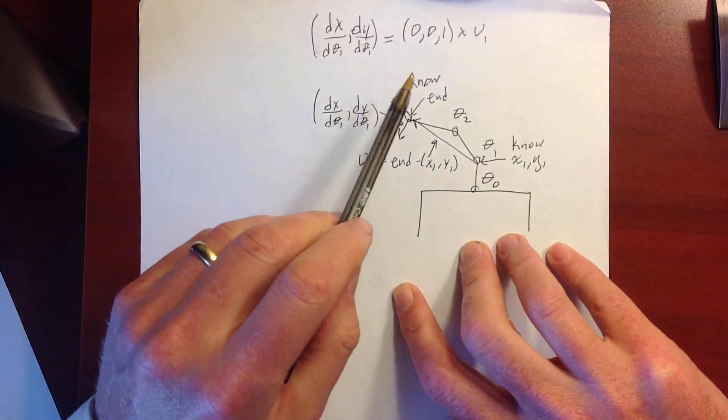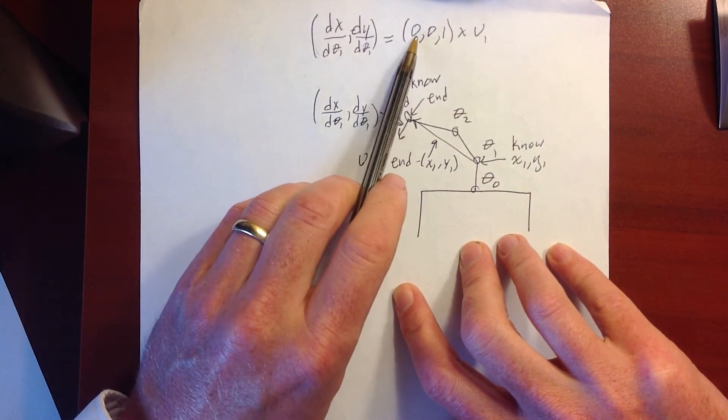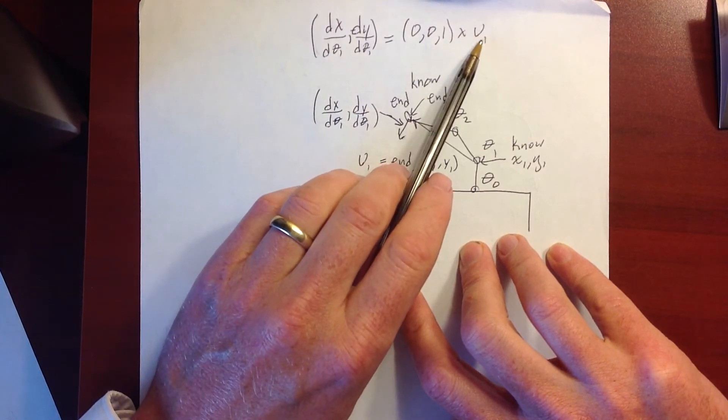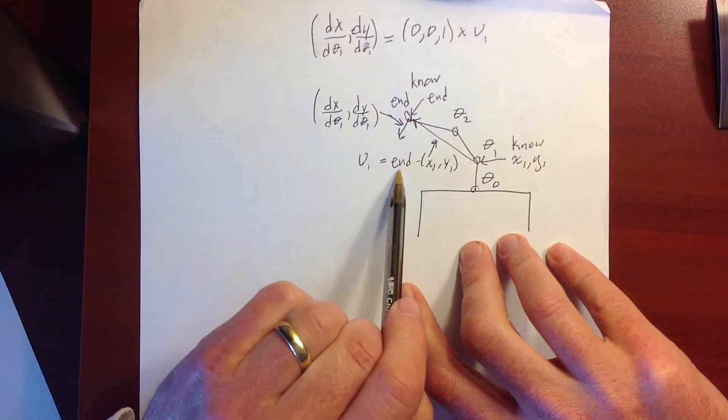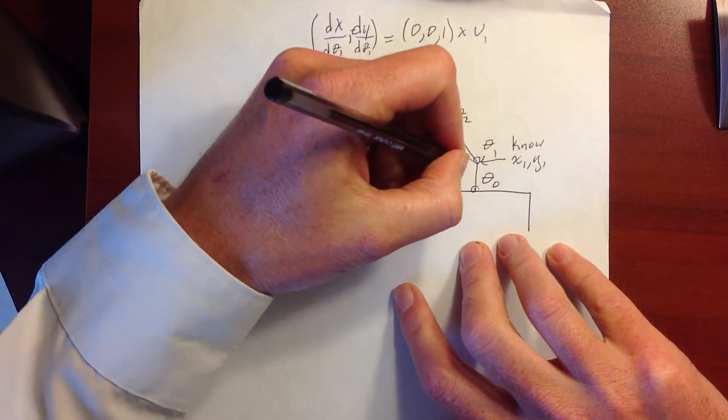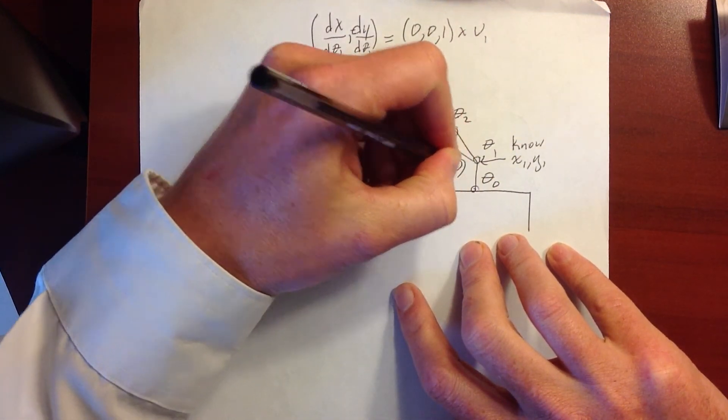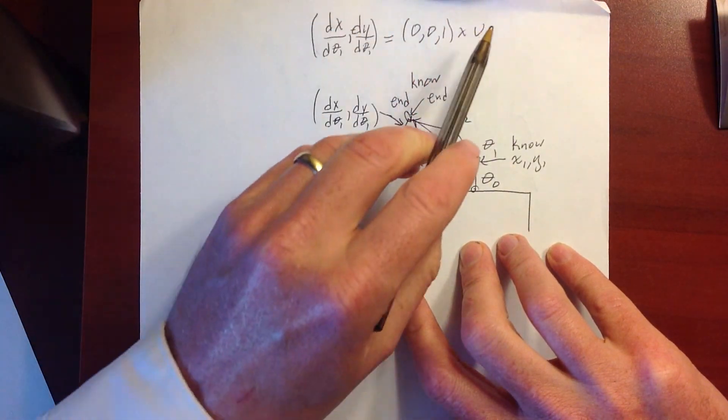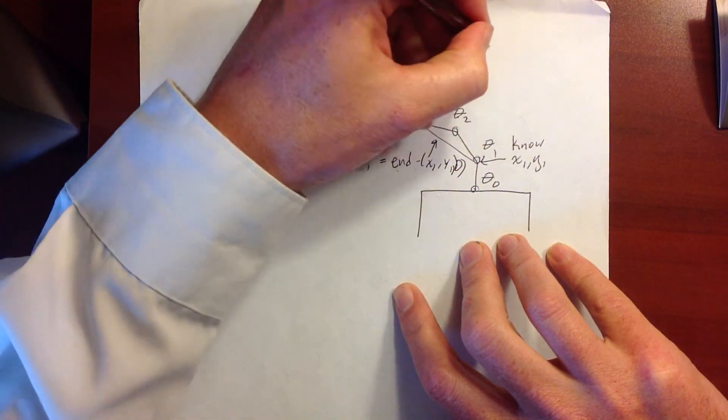Now you might be a little concerned here because I'm taking a three-valued vector, 0, 0, 1, which represents the axis of rotation, and crossing it with the two-valued vector, which is the end point minus x1, comma y1. Well, it turns out I can just add in a z component here. And so what I'll really have is just add in 0 as the z component.